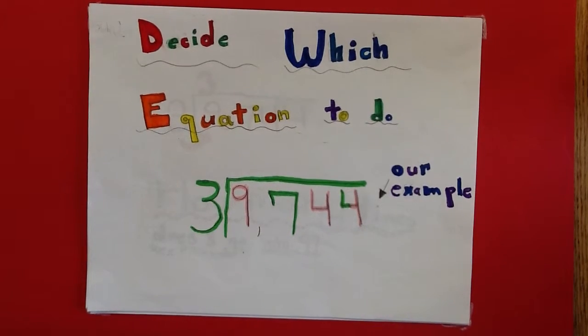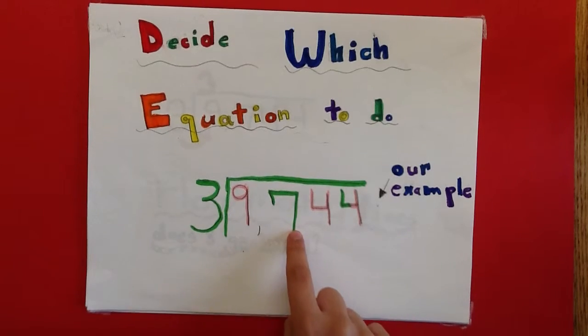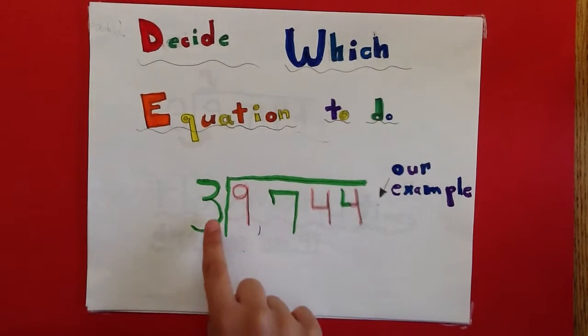Decide which equation to do. Our equation is 9,744 divided by 3.